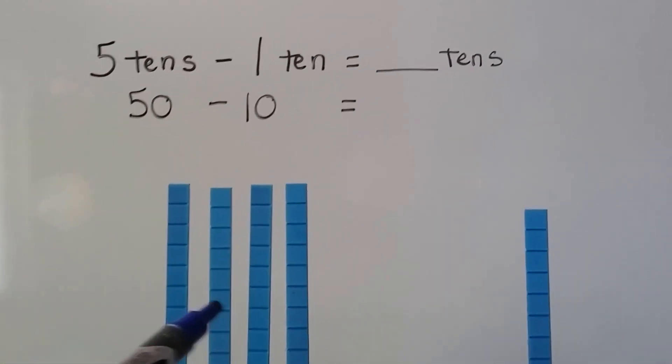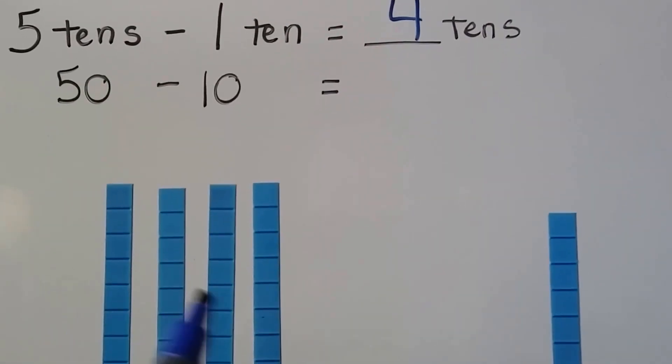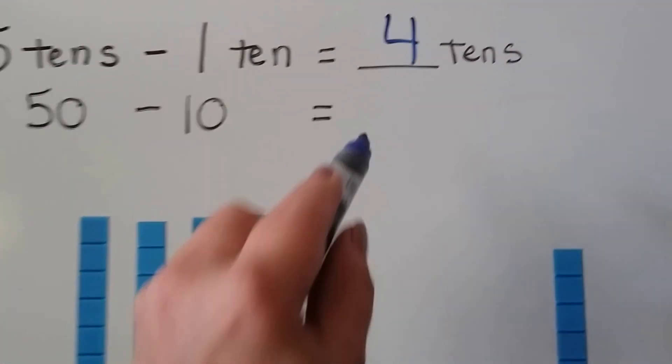We have four tens left. And four tens equals forty. Fifty minus ten is forty.